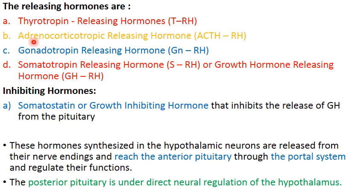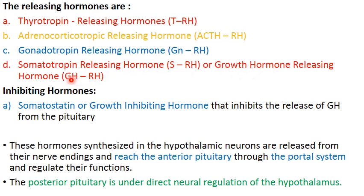Next releasing hormones: adrenocorticotropic releasing hormone (ACTH-RH) goes to the anterior pituitary and stimulates it to release ACTH. Gonadotropin releasing hormone (GnRH) stimulates the release of gonadotropins from the anterior pituitary. Somatotropin releasing hormone (SRH), also called growth hormone releasing hormone (GHRH), stimulates the release of growth hormone.